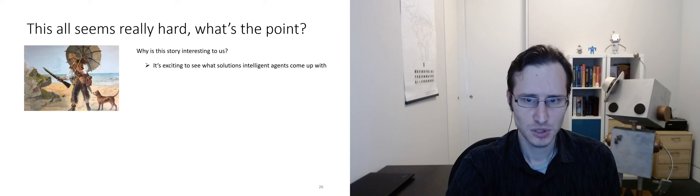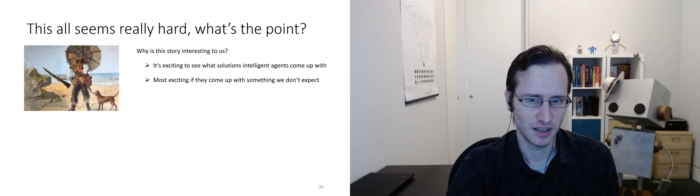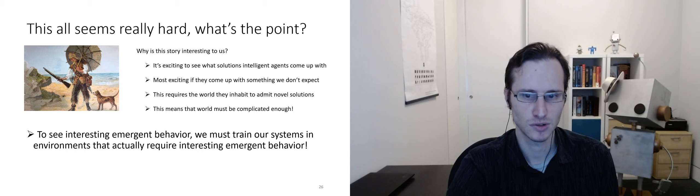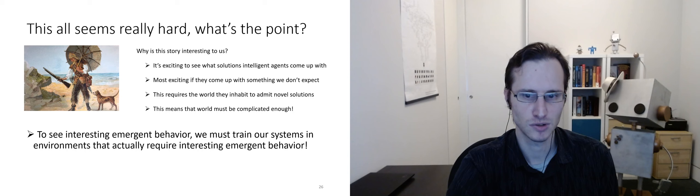So what's the point of all this? Why is this story interesting? Well, besides the technical challenge, it's exciting to see what solutions intelligent agents come up with. It's most exciting if they come up with something that we don't expect. And this requires that the world they inhabit admits novel solutions. It means the world has to be complicated. To see interesting emergent behavior, we have to train our systems in environments that actually require interesting emergent behavior. RL in the real world may be difficult, but it's also far more rewarding. Thank you for listening.